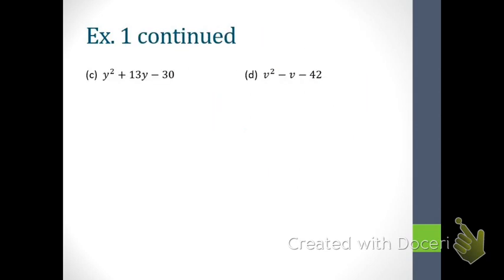Looking at letter C — what type of polynomial? A trinomial with leading coefficient 1. Drop the X. What's the first thing we look at? The second sign — highlight it. The sign is negative; this is the first time we've seen this. When the second sign is negative, what do we automatically know about the two signs in our answer? They're going to be different — one plus and one minus. It doesn't matter if I put the minus on the left and the plus on the right, as long as one is plus and one is minus.